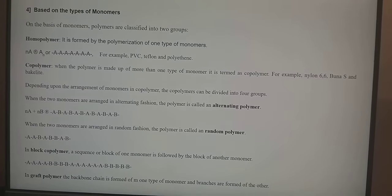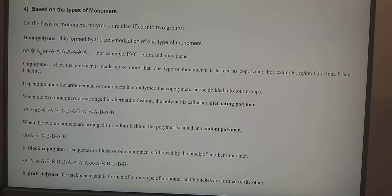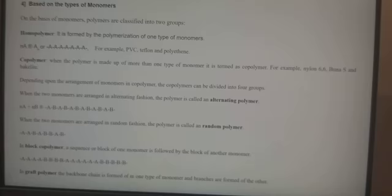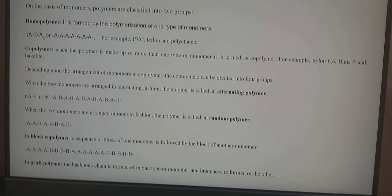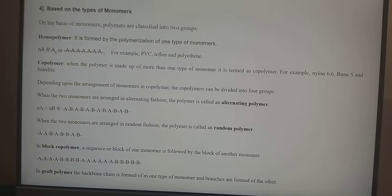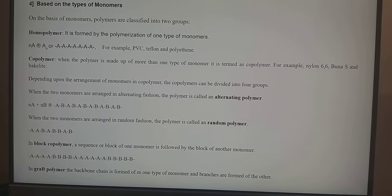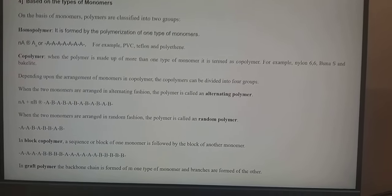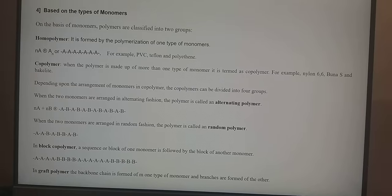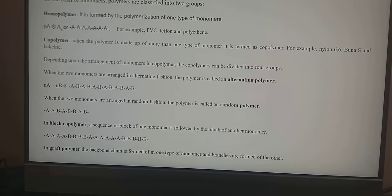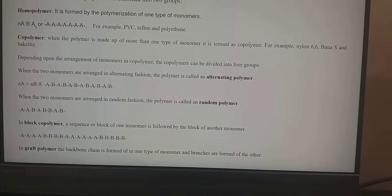Depending upon the arrangement of monomers in the copolymer, copolymers are divided into four groups: alternating polymers, random polymers, block copolymers, and grafted polymers. In alternating polymers, the two monomers are arranged in alternating fashion. In random polymers, the two monomers are arranged in a random fashion. In block copolymers, a sequence or block of one monomer is followed by a block of another. In grafted polymers, the backbone chain is formed by one type of monomer and the branches are formed by another.